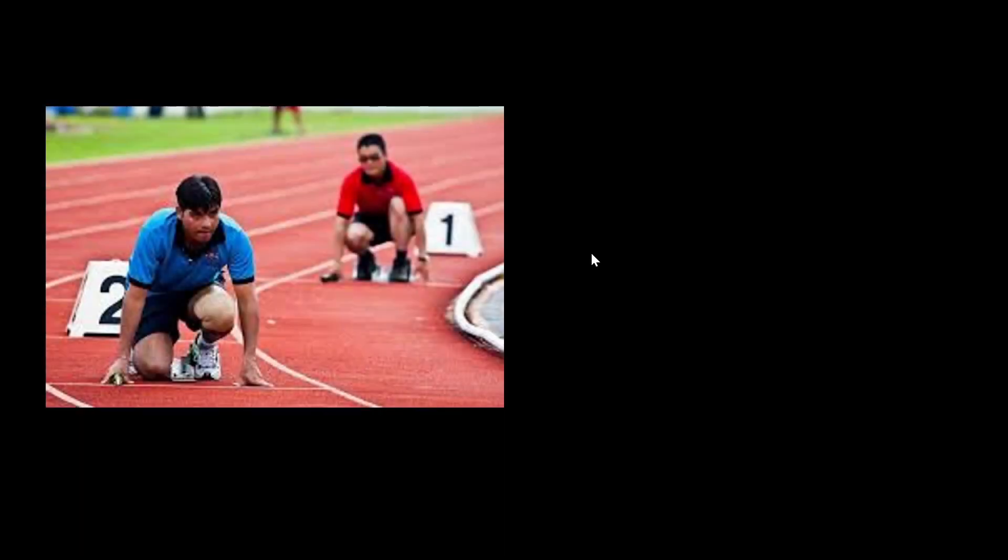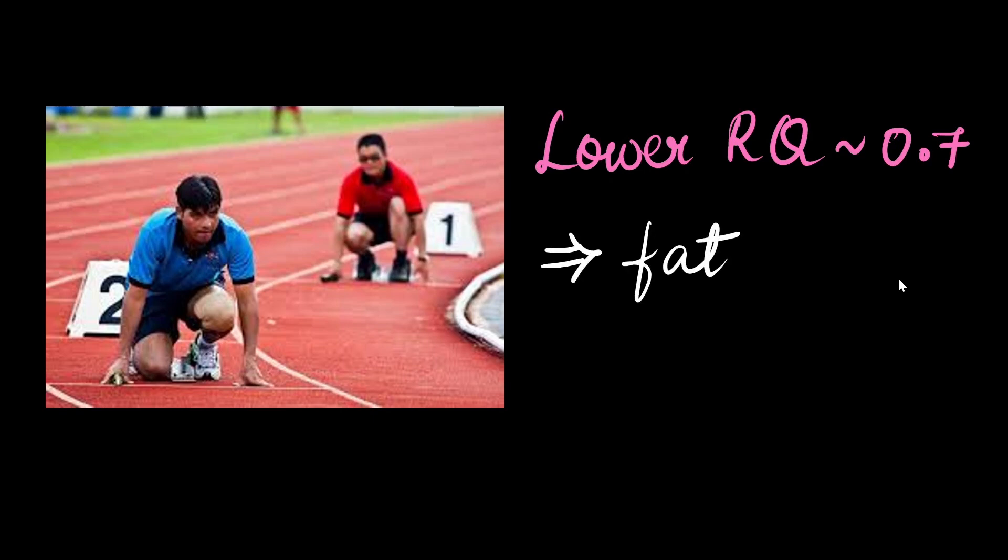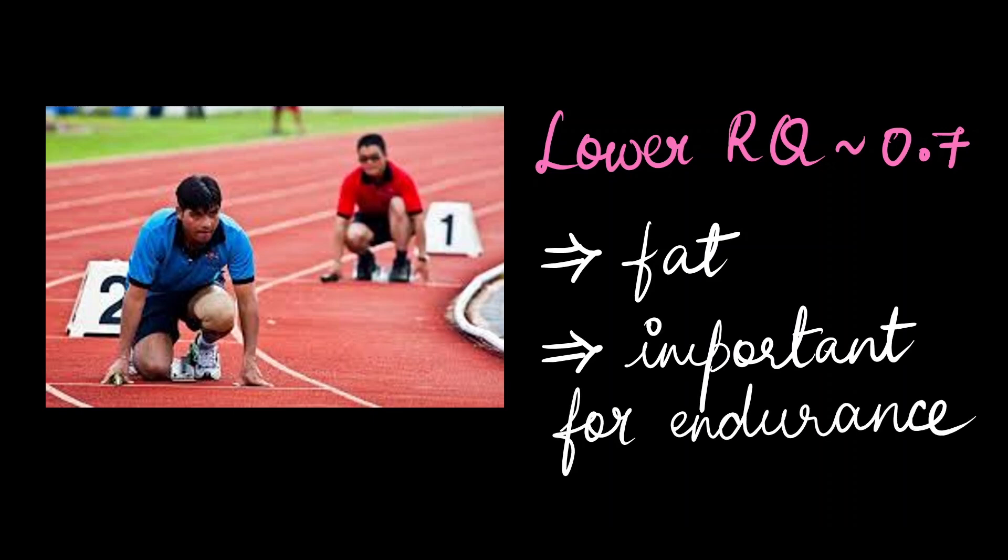In sports, athletes often monitor the RQ value to optimize the body's metabolism. The type of fuel used by the athlete can affect their performance throughout the activity. So, let's say we record a lower value of 0.7. We immediately know that the body is in the fat burning mode. And this is usually important for endurance sports.